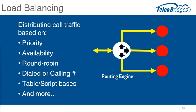Routing can also use complex tables, scripts, or external engines to help make decisions about where to send calls. It ranges from basic load balancing using round robin, priority, and availability — working around outages or congestion — to much more complex logic based on dialed number, called number, time of day, and other algorithms. Load balancing is just the tip of the iceberg for these routing engines.